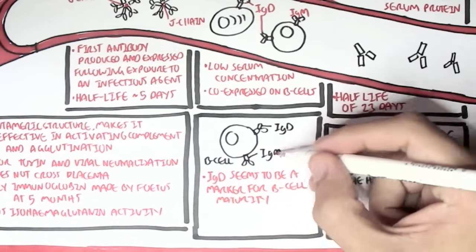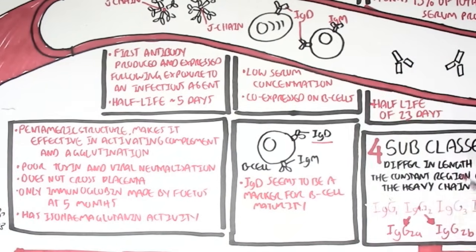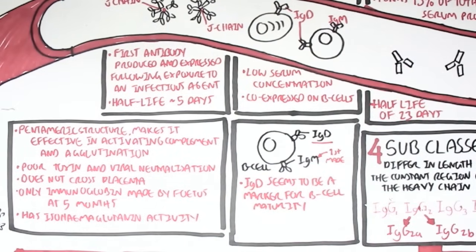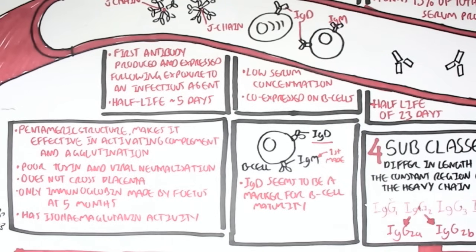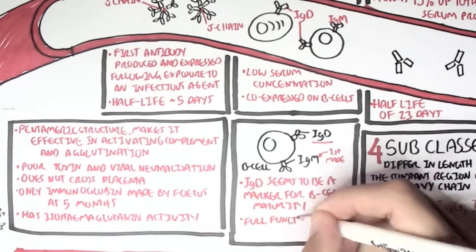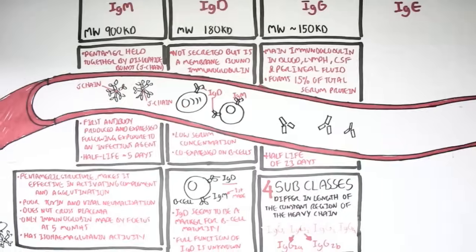here we have a B cell expressing both IgM and IgD. It's not a plasma cell yet. Remember, IgM is the first antibody to be expressed. IgD can be expressed. And if the B cell is IgD positive, it means it is more mature. However, the full function of IgD is still unknown.